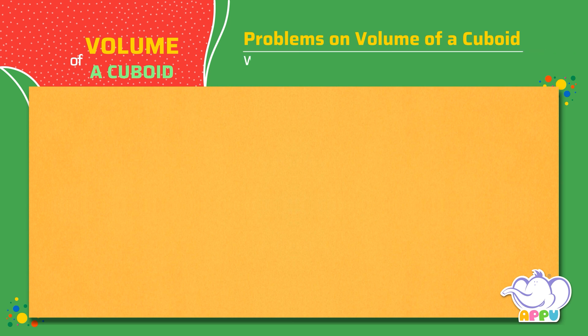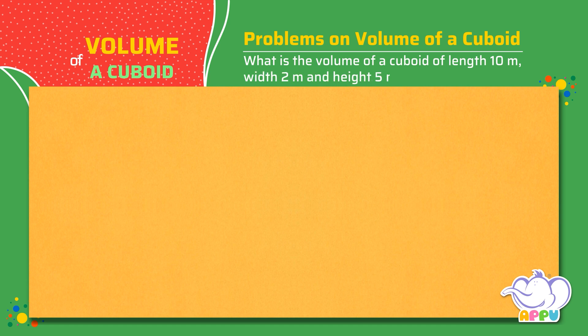What is the volume of a cuboid measuring 10 meters times 2 meters times 5 meters?